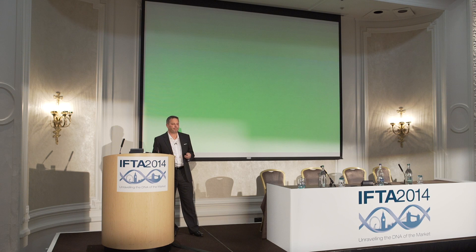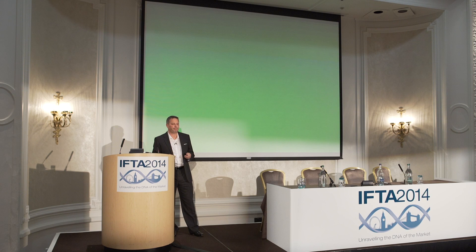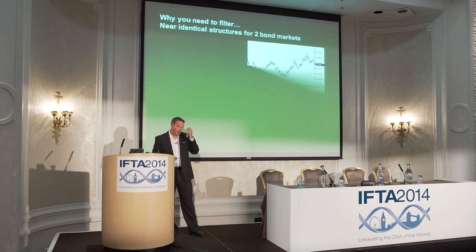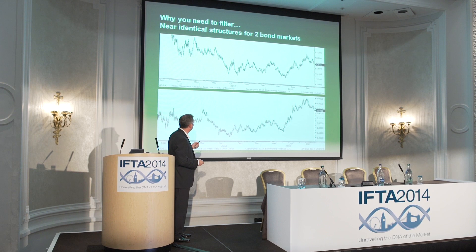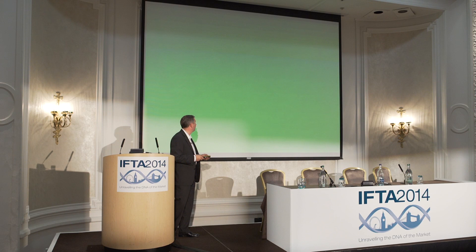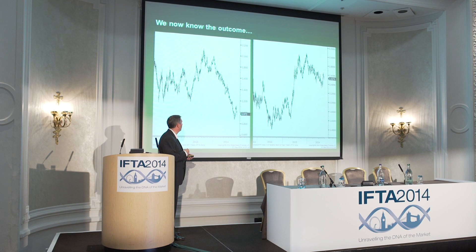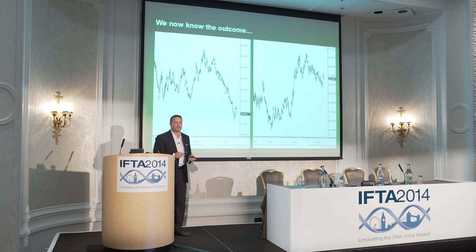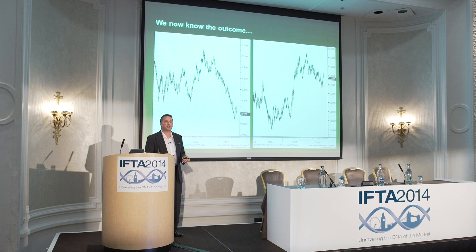Here's an example of a recent filtering process. Two bond markets, highly correlated generally, with almost identical structures — sideways consolidation, broke up, set back, broke up, set back, broke away. They should be roughly the same. But one on the left is Bunds and the one on the right is T-Notes, and they've done two completely different things. One has broken to new lows. So how can we differentiate between these two charts with Elliott Wave? I will go through that in the presentation.